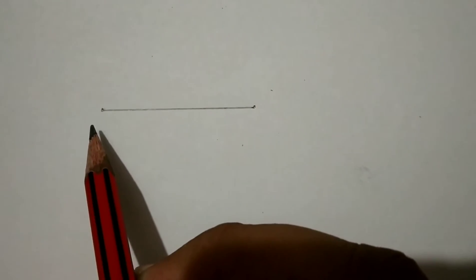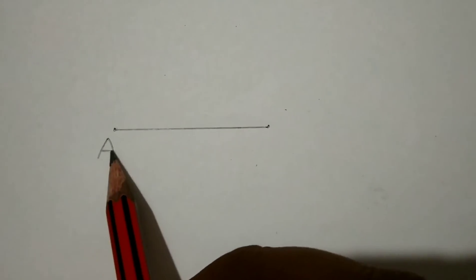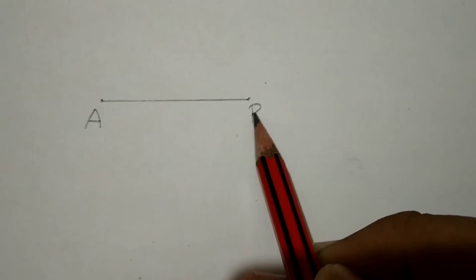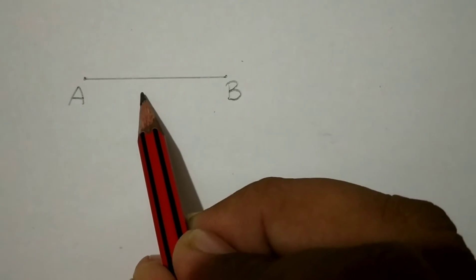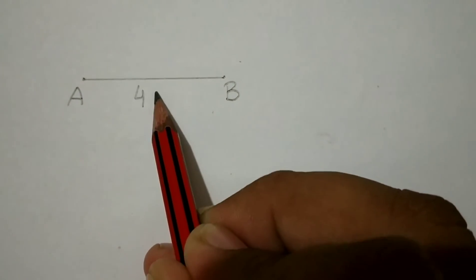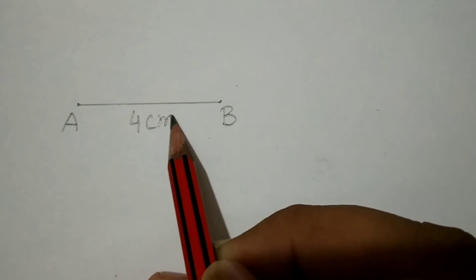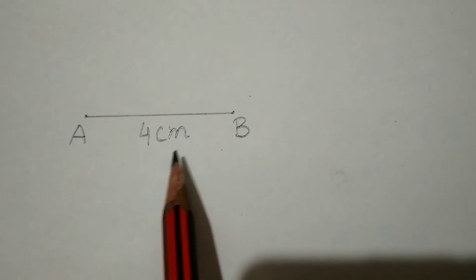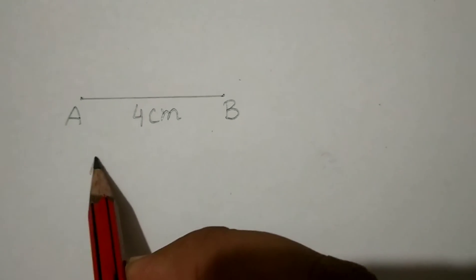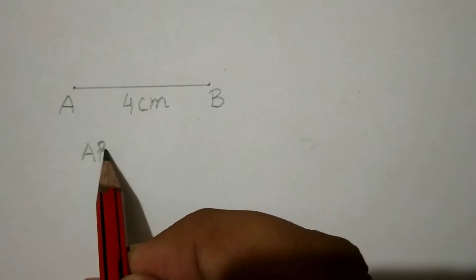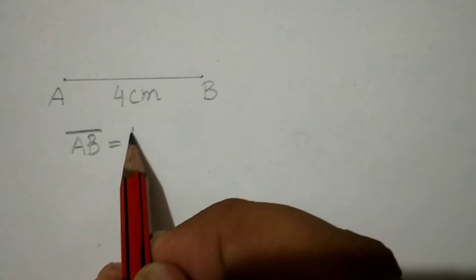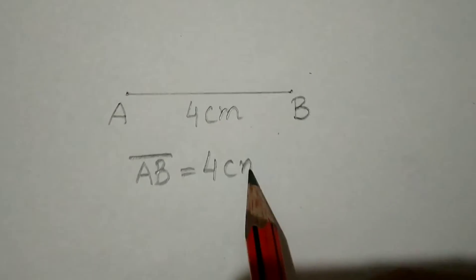We can name this point A and this point B. This line segment has a length of 4 centimeters. So we write that line segment AB has length 4 centimeters.